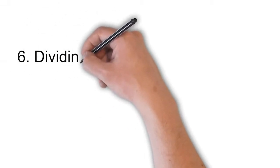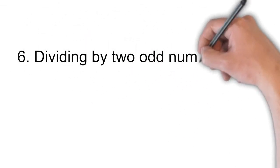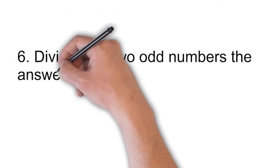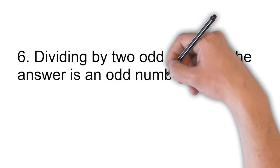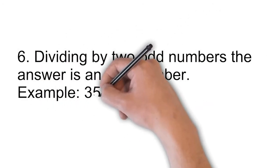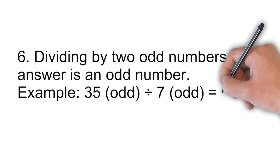Dividing two odd numbers, the answer is an odd number. Example: 35 divided by 7 is equal to 5 which is an odd number.